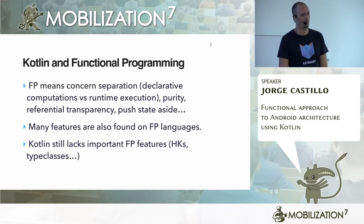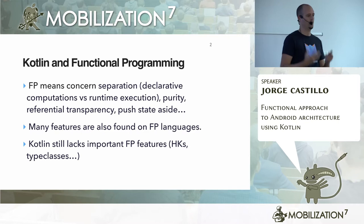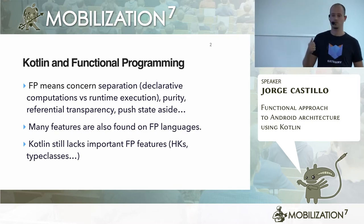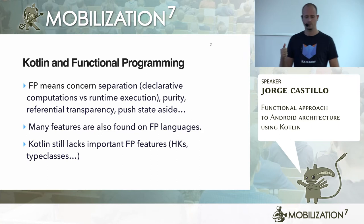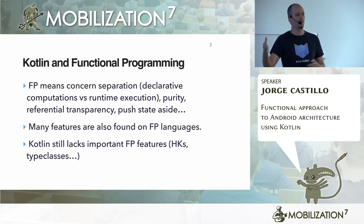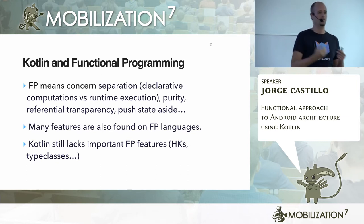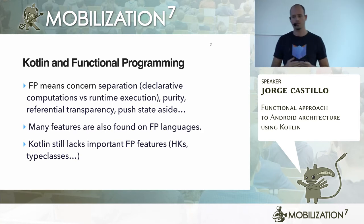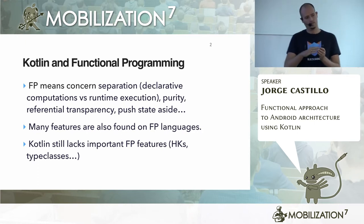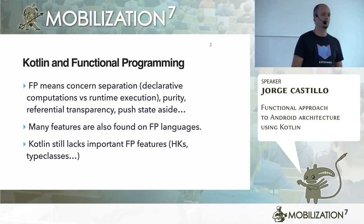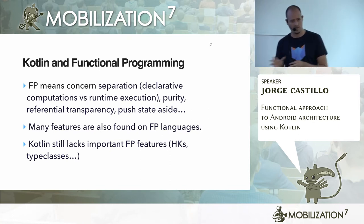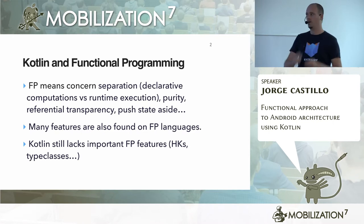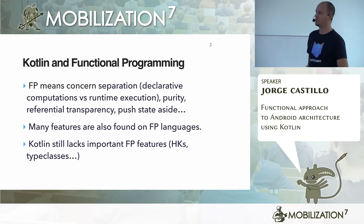When we talk about functional programming, there are many things we should be thinking about. One of those would be constraint separation, because you end up declaring your whole execution tree across your different layers inside your architecture in a declarative way, but deferring its execution. So it's not going to be run — it's going to be wrapped inside a package, and we are deferring its execution to a moment later on. That's very good for testing, for example.